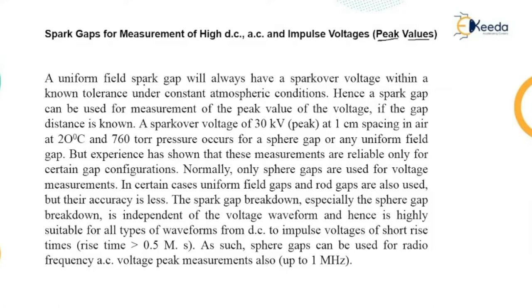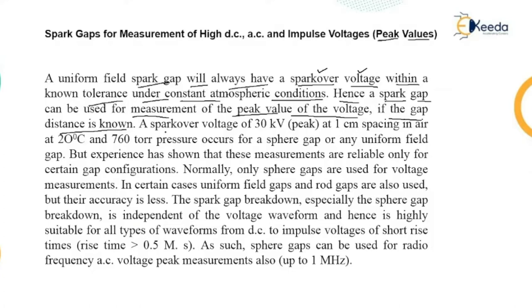A uniform field spark gap will always have a spark over voltage within a known tolerance under constant atmospheric conditions. These atmospheric conditions are very important and will be noted in the consecutive slides. Hence a spark gap can be used for the measurement of peak value of the voltage if the gap distance is known.